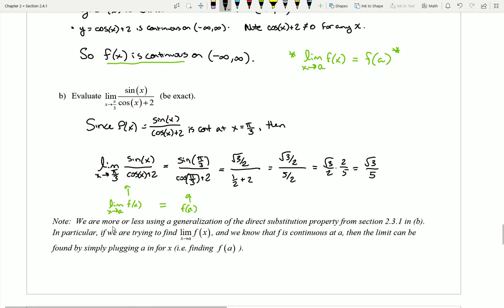So as I state down here in the note, we are more or less providing a generalization of the direct substitution property that we talked about in section 2.3.1. Now in that section we said that direct substitution was only able to be used on polynomials and rational functions, but what we're seeing now is that really if I have a continuous function I can actually use direct substitution as well. Since this says that if my function is continuous these things are always equal and so my limit is automatically equal to just what happens when I plug in a.